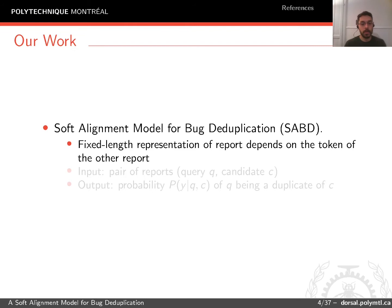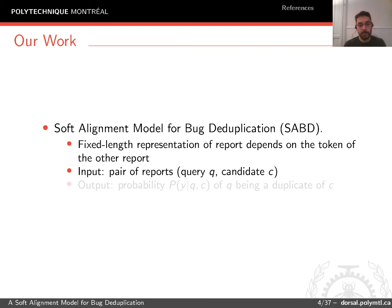In our work, we propose a soft-aligned model for bug duplication, SABD. In this model, we dynamically generate the fixed-length representation of the reports, so this representation depends on the tokens of the other report. This model receives as input a pair of reports — the query Q and the candidate C — and outputs a probability of Q being a duplicate of C.